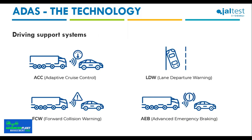Let's go over some of the most common driving support systems found on commercial vehicles. The ACC, or Adaptive Cruise Control, automatically increases or decreases vehicle speed to maintain a safe following distance with vehicles ahead. Some advanced versions can even slow, stop, and accelerate the vehicle in traffic jams. The ACC works thanks to radars and computer-connected cameras.